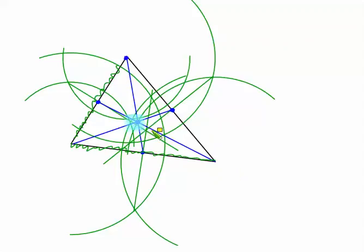This point is the centroid. And as we saw in class, if you were to cut out the triangle, it balances at the centroid.